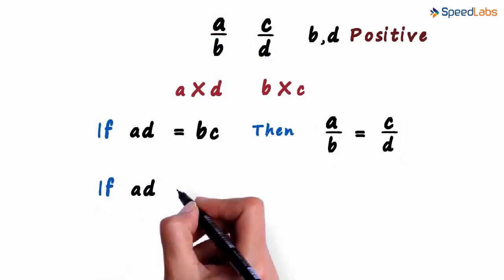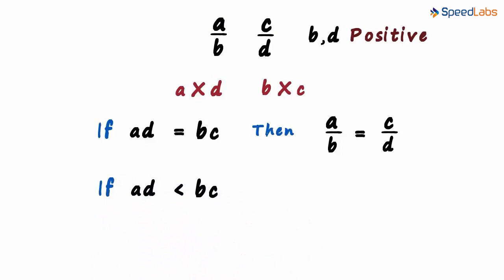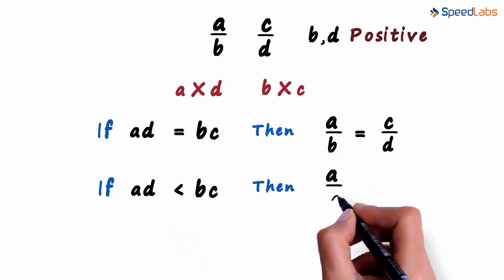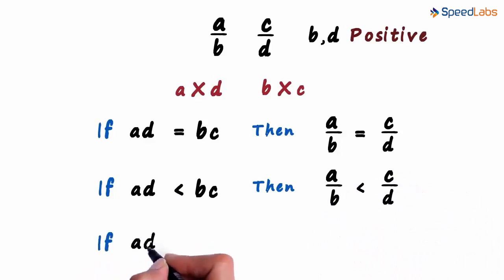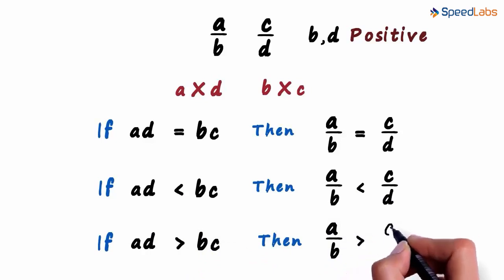But what if AD is less than BC? Simple! Then A by B will also be less than C by D. And if AD is greater than BC, then A by B is greater than C by D.